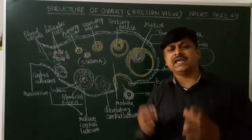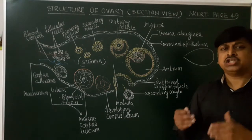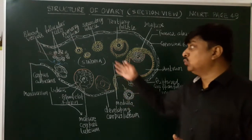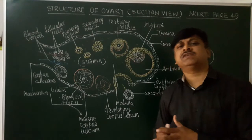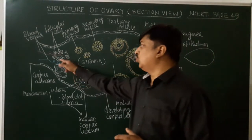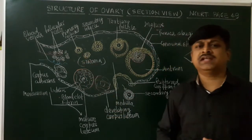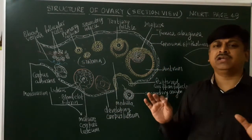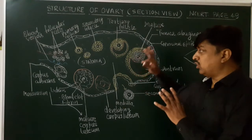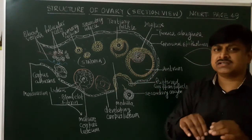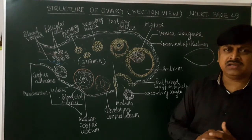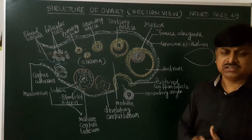At the time of birth of the baby, there are numerous primary follicles present. You can see there are so many follicular cells. One thing to note: the process of oogenesis starts during embryonic development.